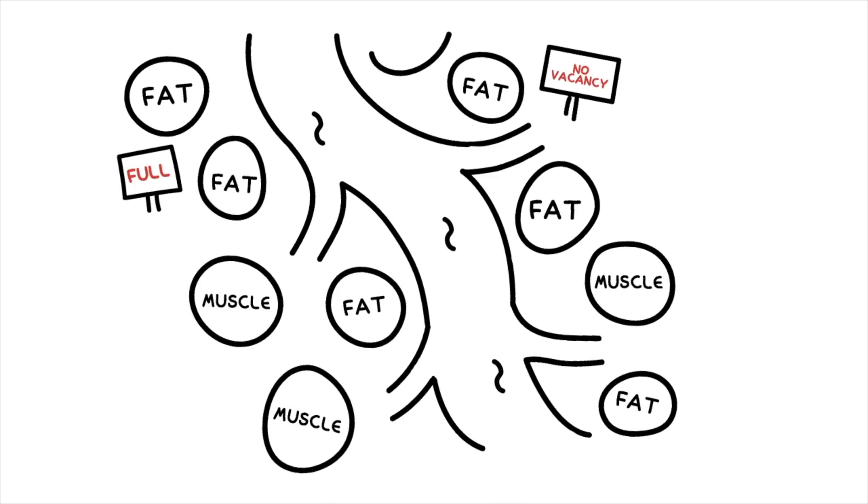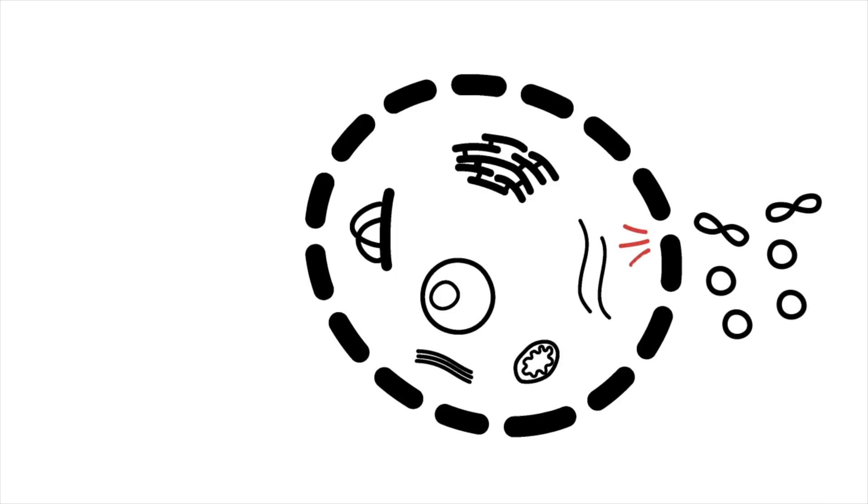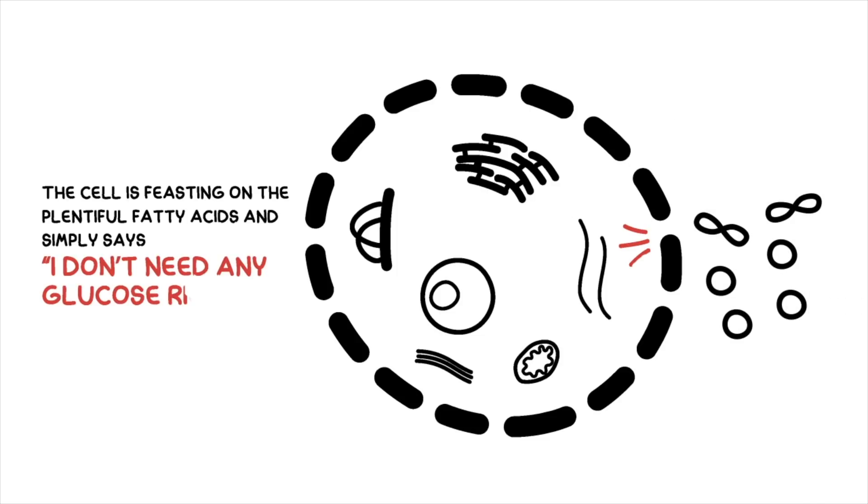When you fill up your fat cells, mostly by overeating carbohydrates like grains, your body can no longer store the excess fatty acids. They remain in your bloodstream, accessible to your muscle cells. And so your muscle cells begin burning plentiful fatty acids rather than glucose on a regular basis. Fatty acids can get into the muscle cell walls very fast, so the cell does not even need any glucose when insulin arrives to ring the bell. This fatty acid burning continues because fatty acids that cannot get into your fat cells remain in your bloodstream to feed your muscle cells.